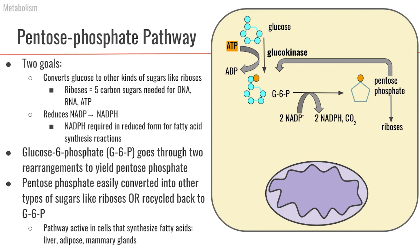Cells that run this pentose phosphate pathway frequently are typically involved in synthesizing lots of fatty acids. So this pathway is going to be very active in adipocytes, in the liver — which is also involved in de novo lipogenesis — and in mammary glands. This is one of the possible routes that glucose-6-phosphate can take once it's inside a cell.